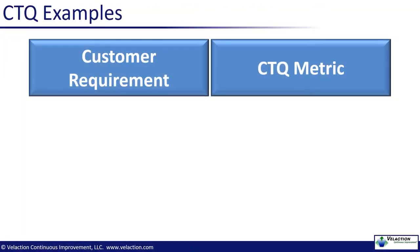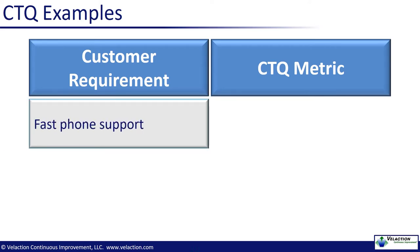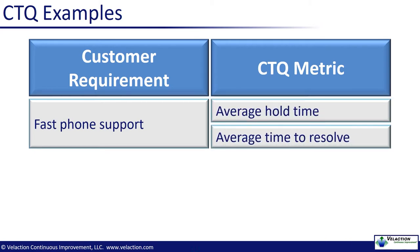Let's take a look at a few examples of Critical to Quality metrics. If customers require fast phone support, you have a few options in how to measure that. Average hold time gives an indication as to how long it takes to start helping them. Average time to resolve measures how long it is until a customer is completely satisfied. Depending upon your customer base, either one may be more important. If customers want to take their time and really dive into complicated problems, hold time — the time until they can actually talk to a live human being in support — might be more important.